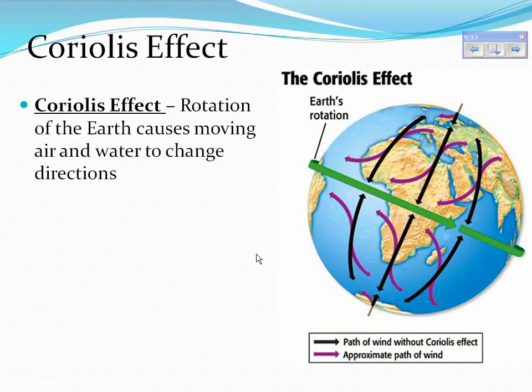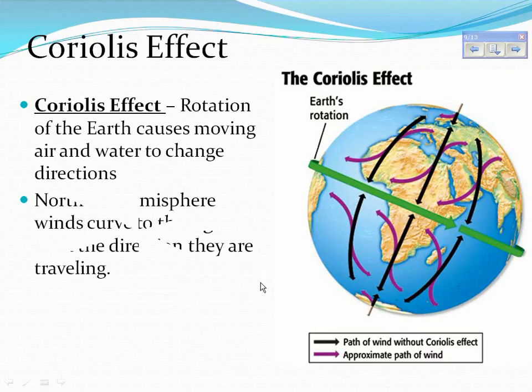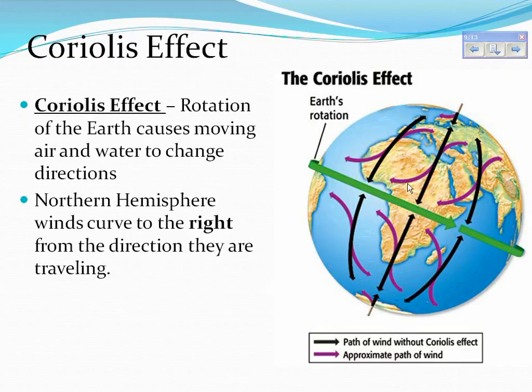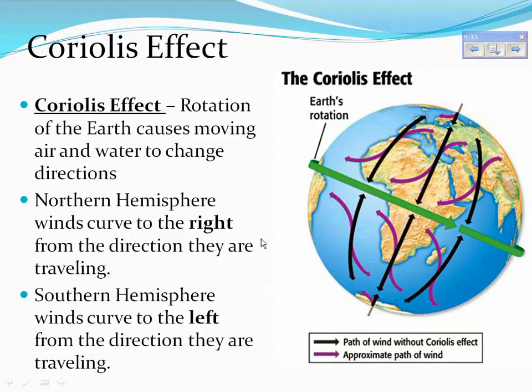The Coriolis effect is simply the rotation of the earth causing moving air and water to change direction. Northern hemisphere winds curve to the right from the direction they are traveling. Southern hemisphere winds curve to the left from the direction they are traveling.